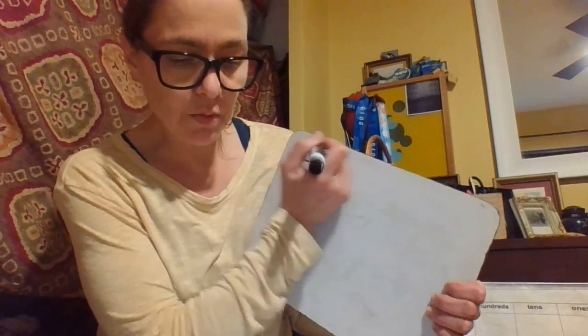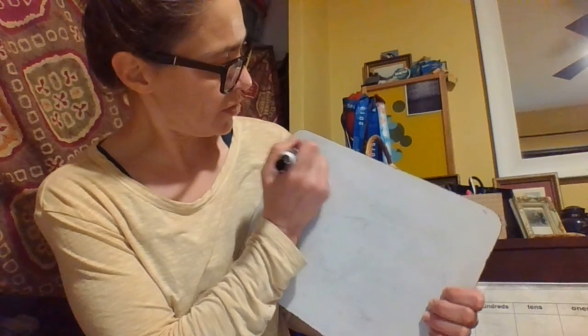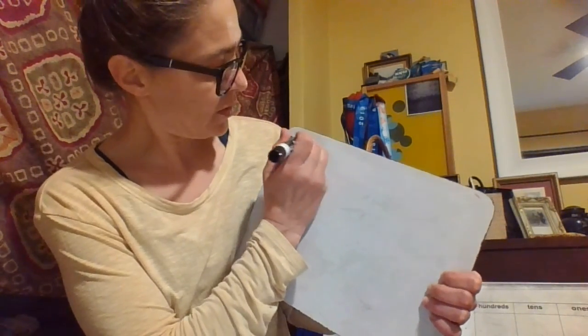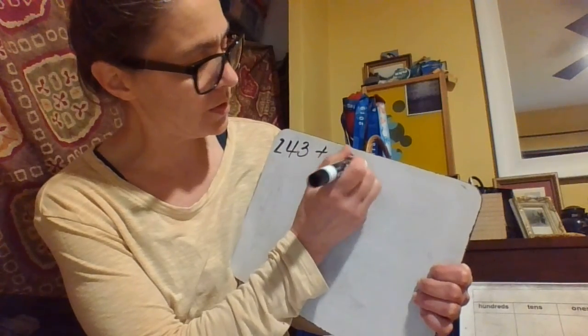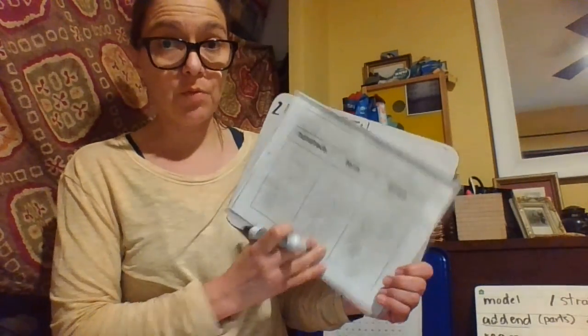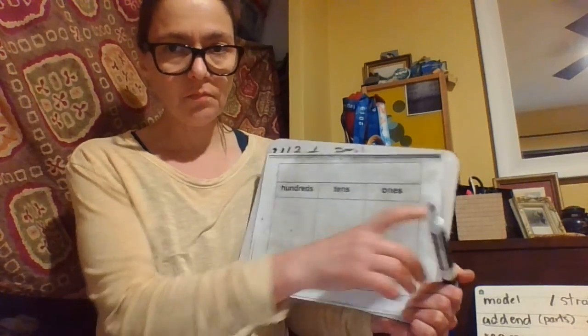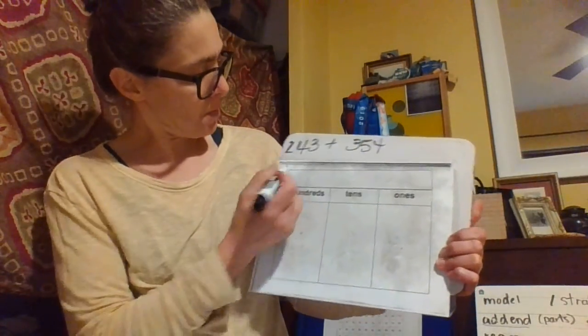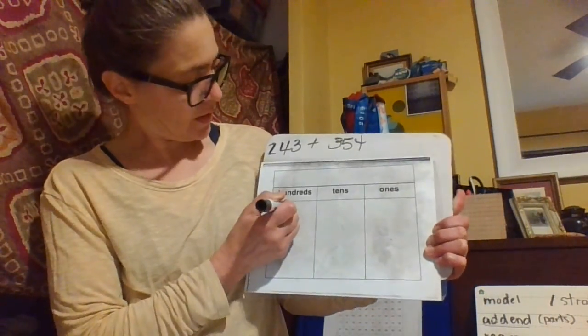You'll also need your place value mat, and if you don't have one please draw one. We'll do the solve and share. Use place value blocks to find 243 plus 354. You can use your place value mat. If you have place value blocks, the base 10 blocks and you want to use those, you can start setting them up. First set up the first addend and I'll draw that for you here.